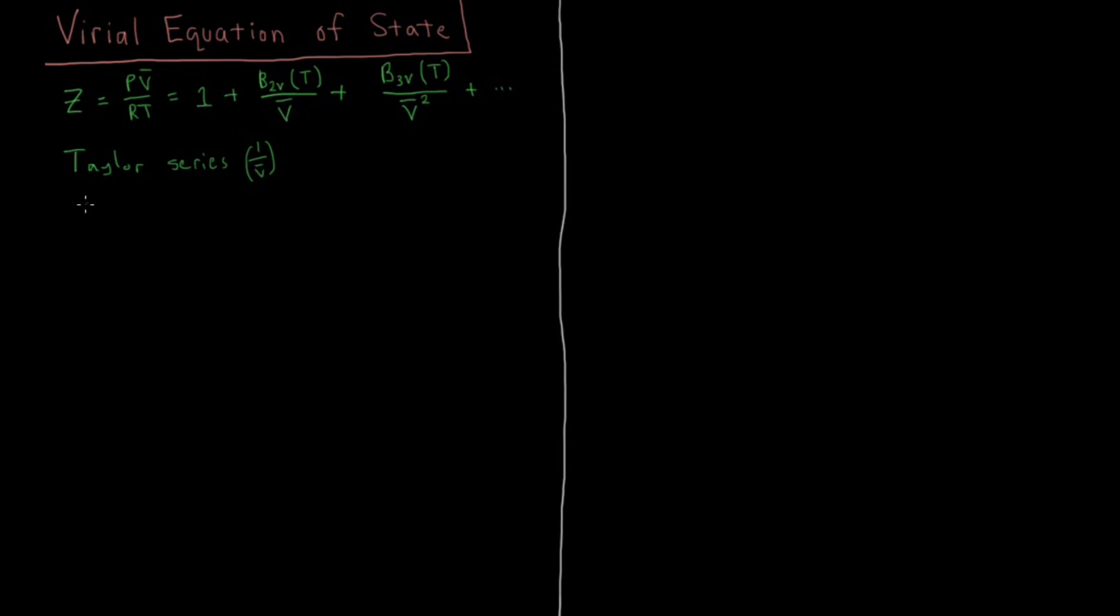So we can also express this slightly differently if we wanted to. This PV bar over RT, we could express that as a Taylor series of pressure instead, where we have 1 plus B2P of T times pressure plus a third coefficient times pressure squared, and so on. And that would be a Taylor series in pressure, in P.